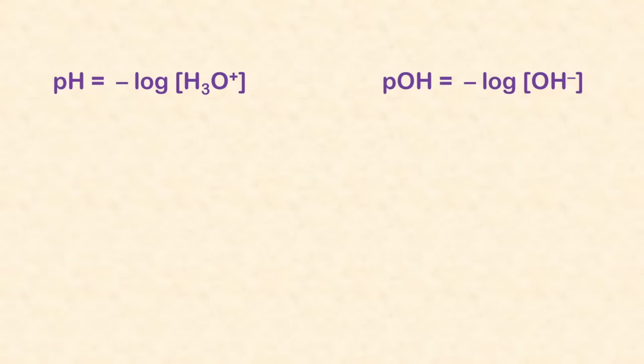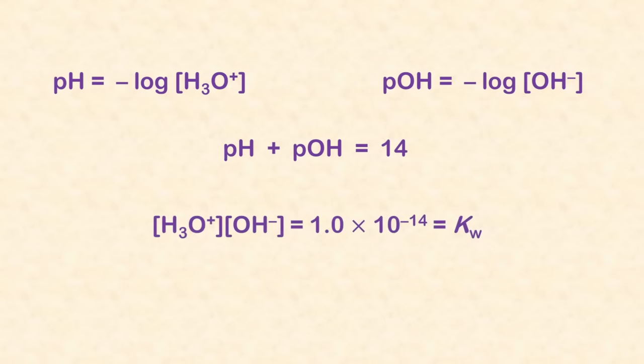Unit 8 is acids and bases. There are a few essential equations in acid-base chemistry. pH equals negative log of the hydrogen ion concentration. pOH equals negative log of the hydroxide ion concentration. And at 25 degrees Celsius, pH plus pOH of any solution equals 14. Also, at 25 degrees Celsius, the hydrogen ion concentration times the hydroxide ion concentration equals 1 times 10 to the negative 14th power, a constant we call KW.